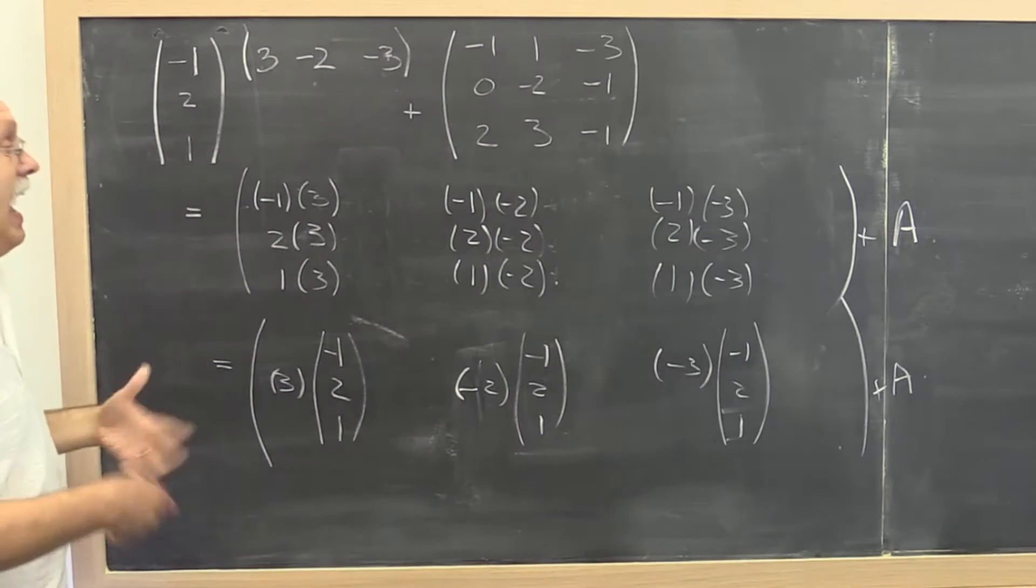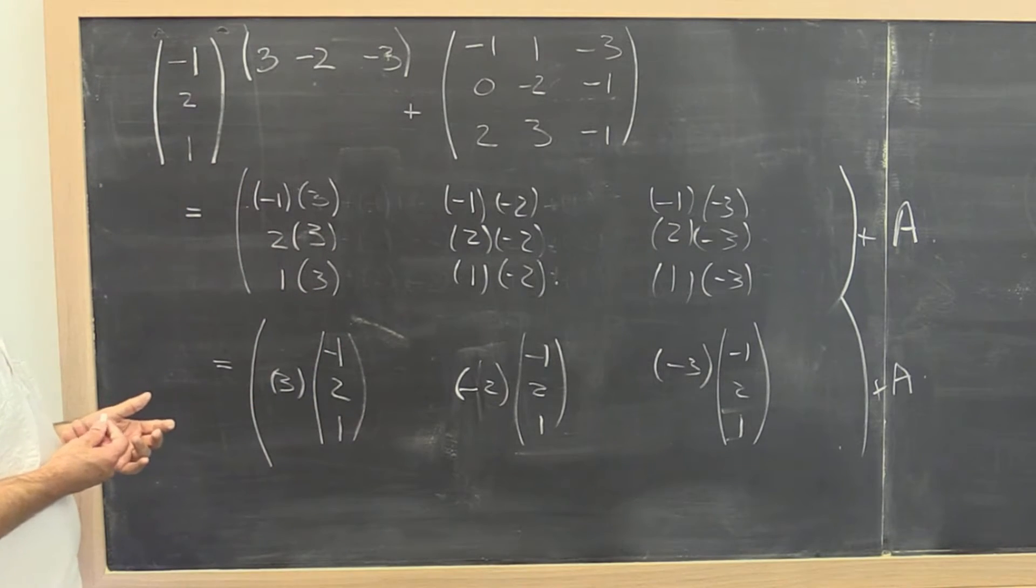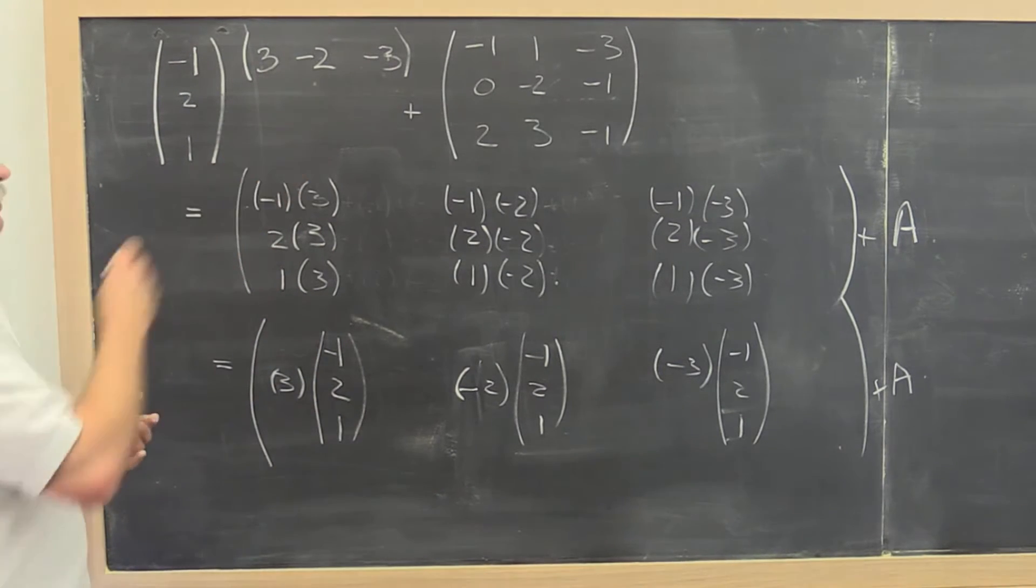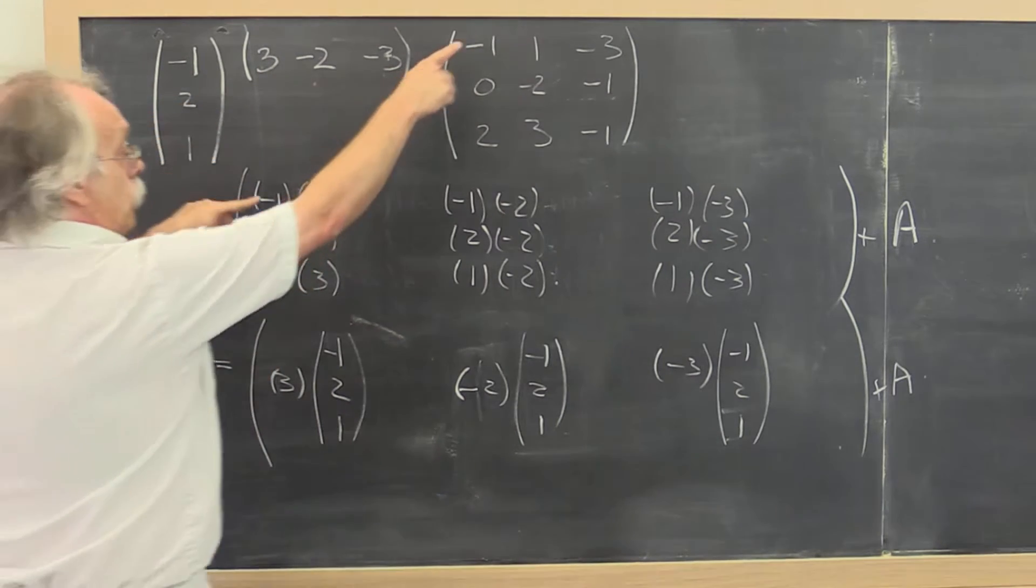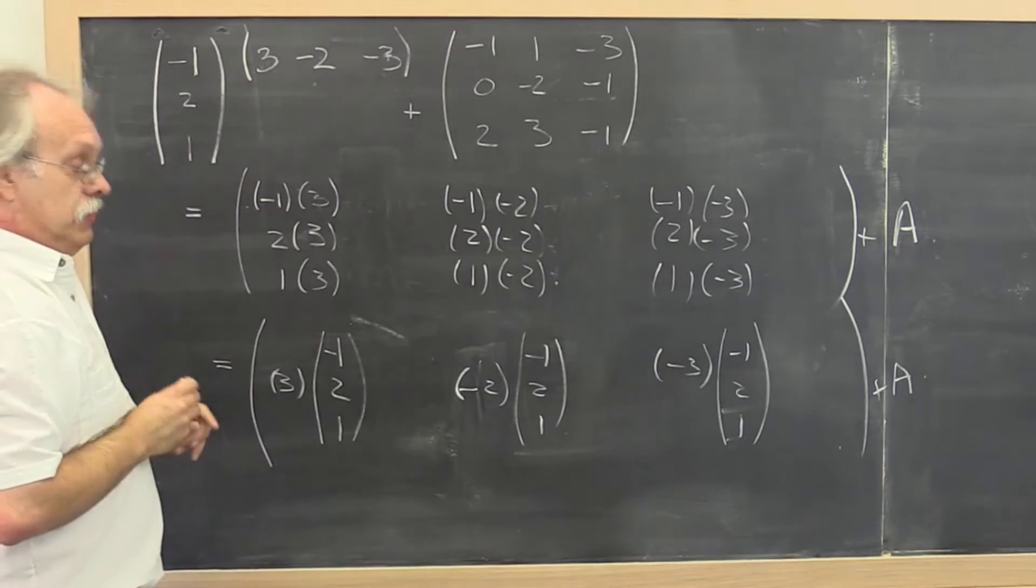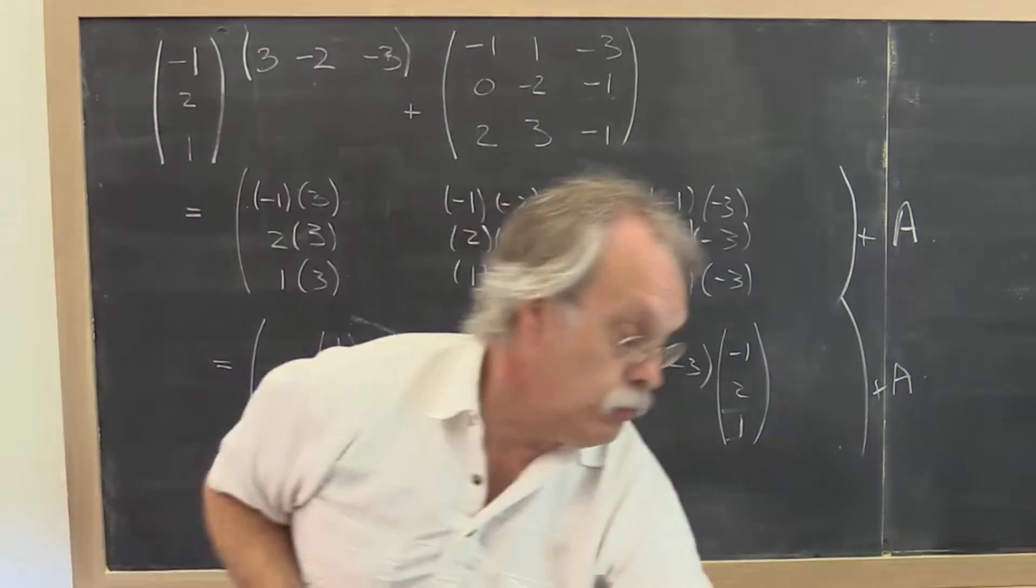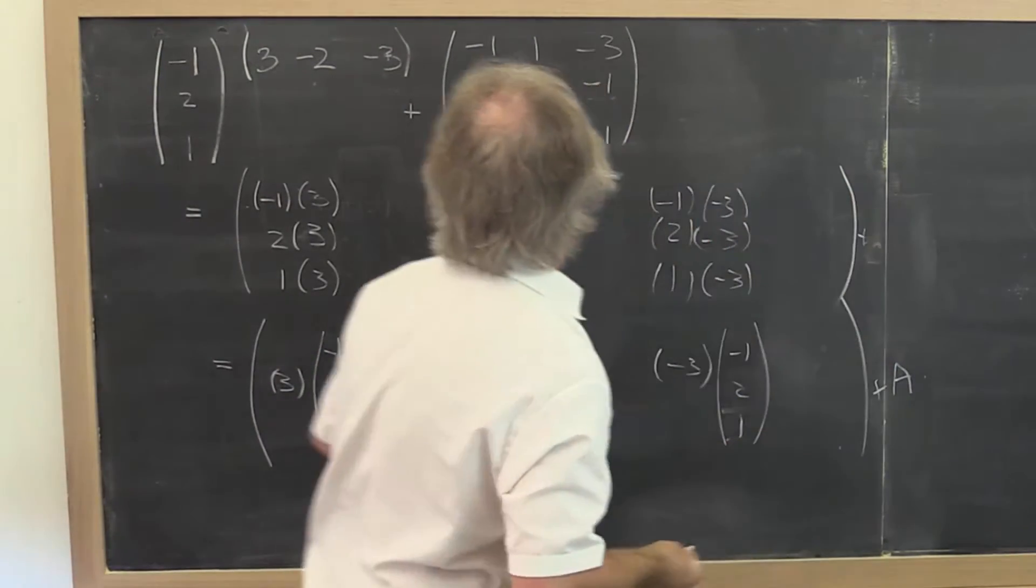Now notice that we want to add this to a matrix. So notice that then corresponding elements must be added together. So if we add A to this, what would we get?